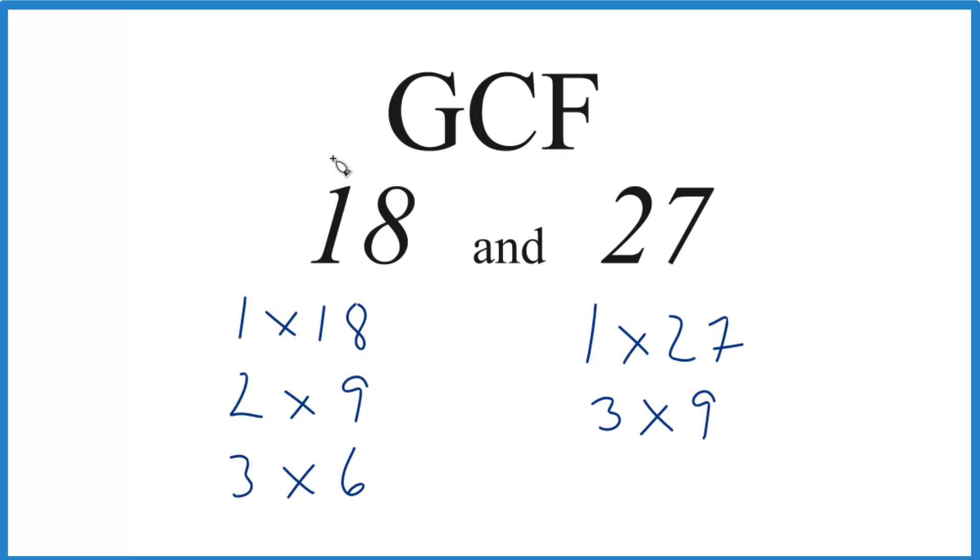So now we have the factors for 18 and 27, and we can find the GCF. We have 1, that's common, they both have 1, they both have 9, and then 3, but it's 9. That's the greatest one.